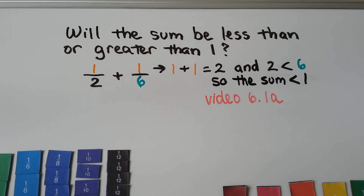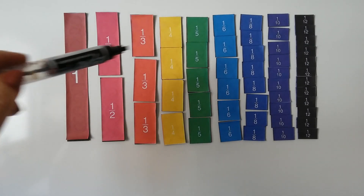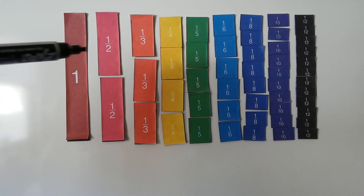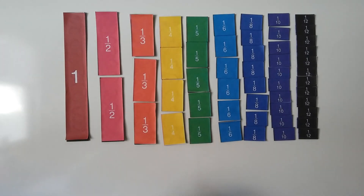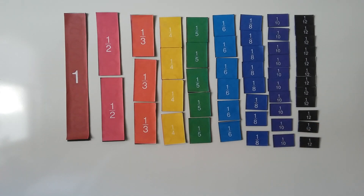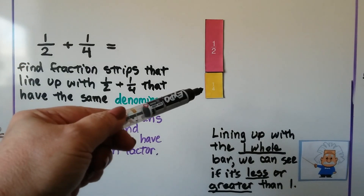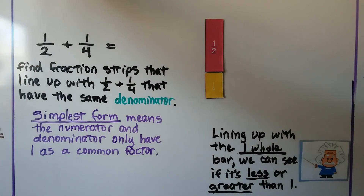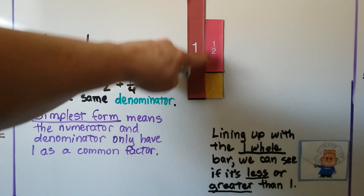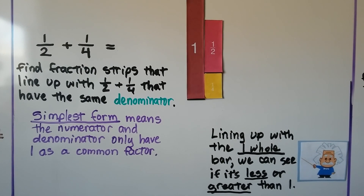We can also compare it to one whole fraction bar. I've got my fraction bars and cut them to separate each part — the halves, thirds, and so on are all cut apart. That's going to help me do addition. We take a piece that's one-half, we take another piece that's one-fourth, we put them together, and we can put them next to a one-whole fraction bar. We can see the sum of these two is going to be less than 1, because it's shorter than the 1.